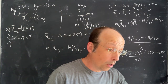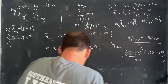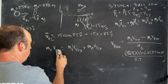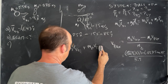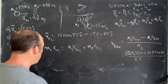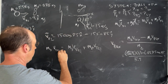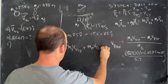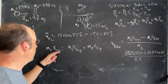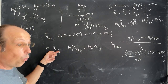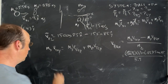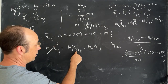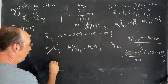Now we can do the y equation — same idea, just change everything to y components. It's a little bit easier because the initial y velocity is zero, so the left side is just zero.